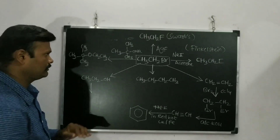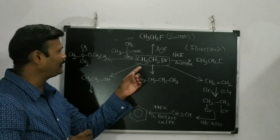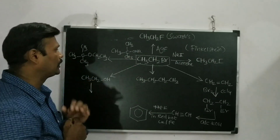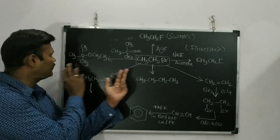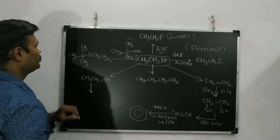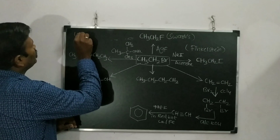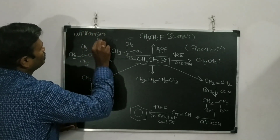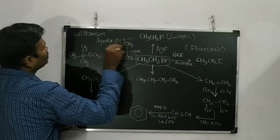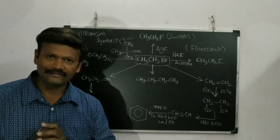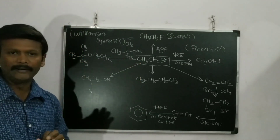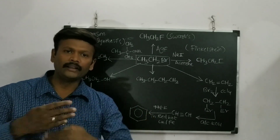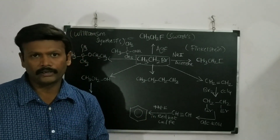Taking the same ethyl bromide, if it reacts with a tertiary alkoxide, it gives an unsymmetrical ether. This synthesis is called Williamson synthesis — the Williamson synthesis of unsymmetrical ethers.